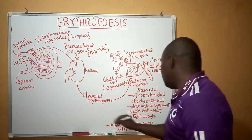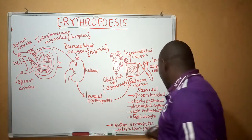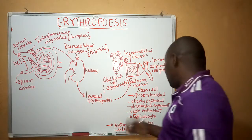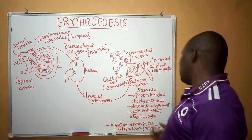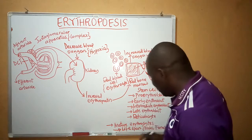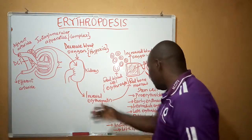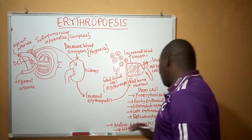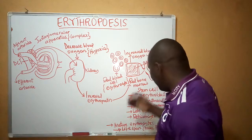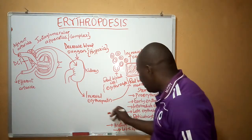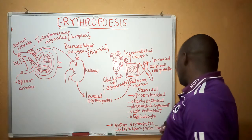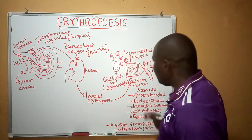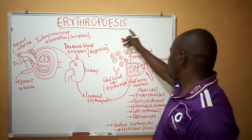Even during the menstruation period, females tend to suffer a decrease in the concentration of red blood cells as well as blood volume. Another indication that males possess higher erythrocyte concentration is the lifespan of erythrocytes: in males it is approximately 120 days, while in females it is 110 days. This shows how androgen plays a great role in the process of erythropoiesis.